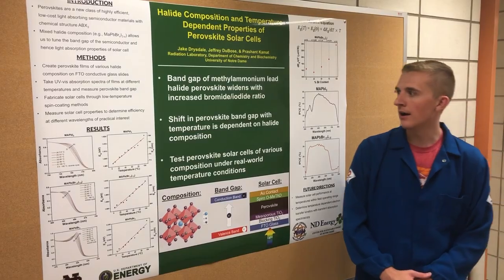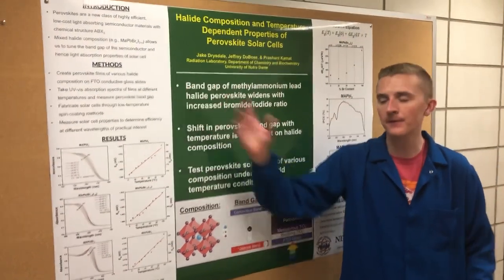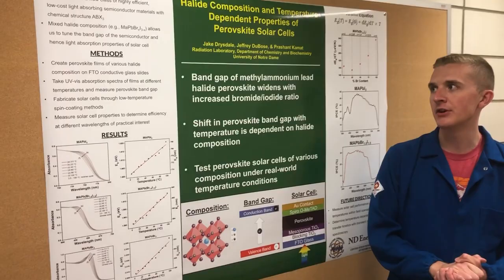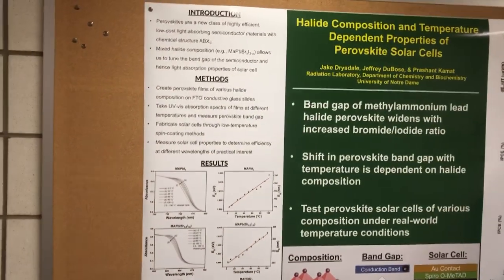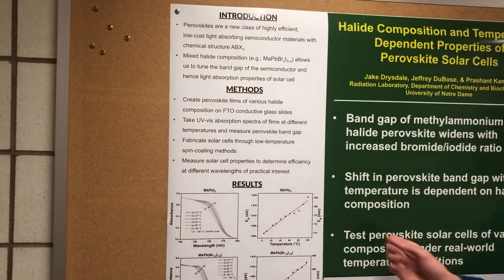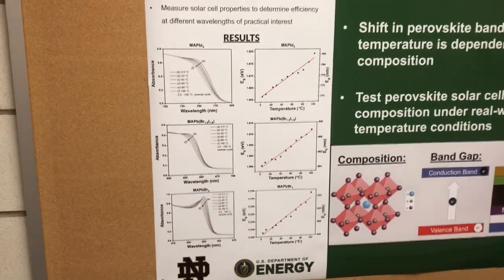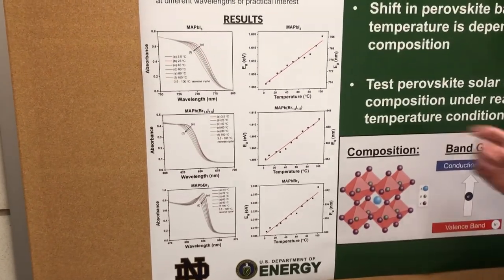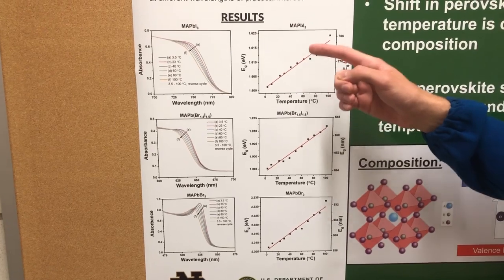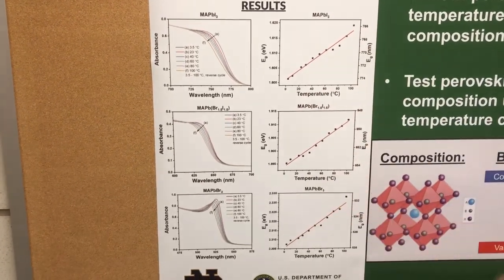Talking about bandgap, we created these perovskite films using a low temperature spin coating technique, and then with these films we took UV-Vis absorption spectra of them, measuring the absorbance spectra at different temperatures for each of these different compositions.